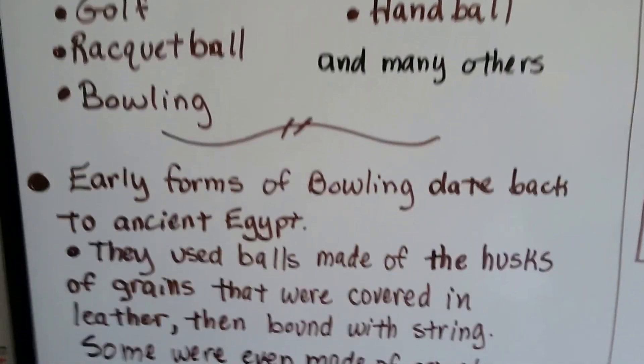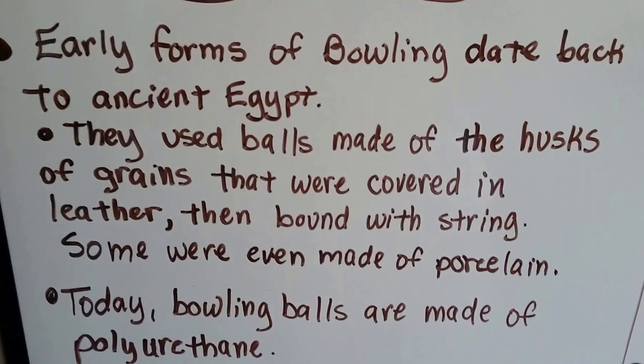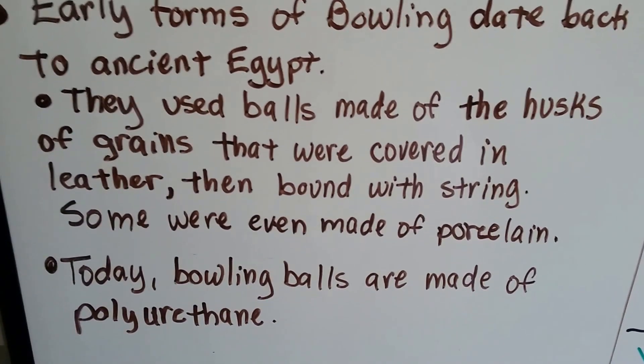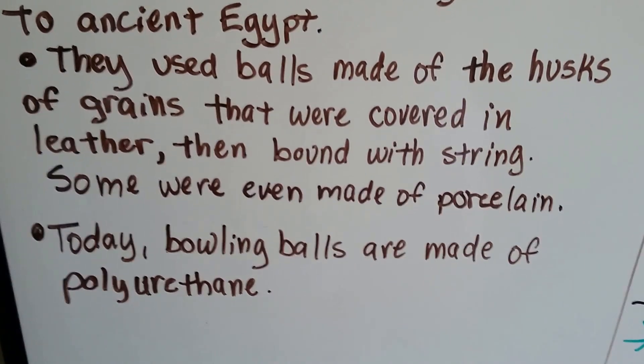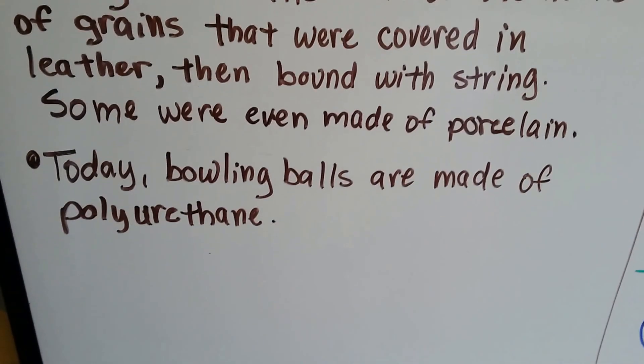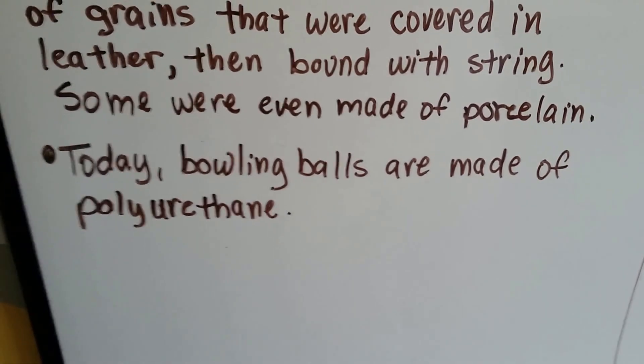Early forms of bowling date back to ancient Egypt. They used balls made out of husks of grains that were covered in leather, then bound with string. Some were even made of porcelain. Today, bowling balls are made of polyurethane, a type of plastic.